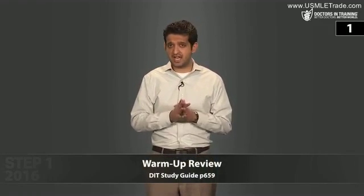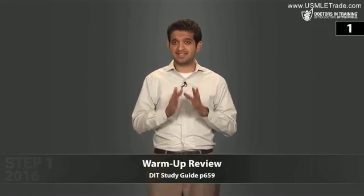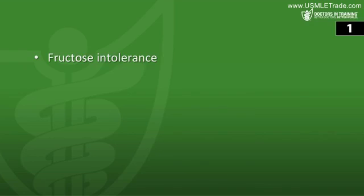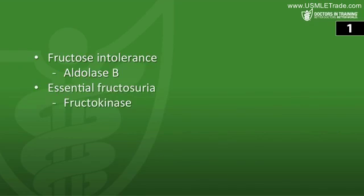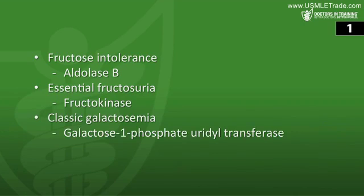First question: which enzyme is deficient in each of the following diseases? Fructose intolerance is Aldolase B. Essential fructosuria is fructokinase deficiency. And classic galactosemia is a galactose-1-phosphate uridyl transferase deficiency.